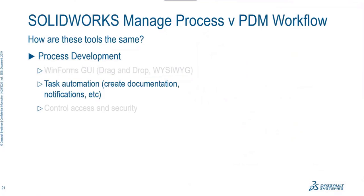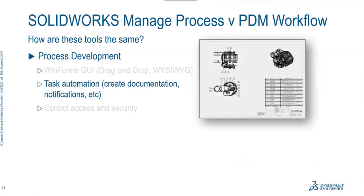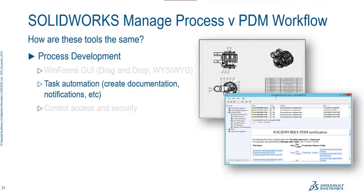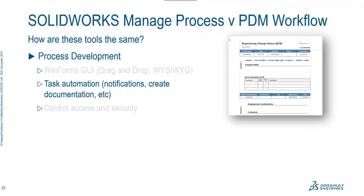Something similar between both tools is task automation. With PDM, you can create things like PDF files automatically — when something gets approved, we could push out a PDF as an item of record, used in other business systems like ERP. We can also create notifications, so if something gets changed or needs an approval, notifications go directly from inside PDM. With Manage, we can also generate documents on demand. There's a capability called reports — for example, an ECO report that can be generated on demand, similar to how we produce PDFs of drawings inside PDM. We can also see task assignments — here I'm looking at a task view in Manage with a reminder that popped up for work I need to do.